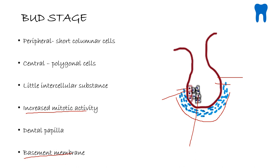Due to this proliferation, the cells are going to further assume the cap stage and the early bell stage, and later we will see how the other structures of the tooth are formed.